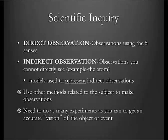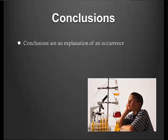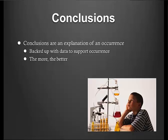It's very important that we're careful in these observations because they're going to help us arrive at the answer we need to find. When we use those observations and come up with an answer, we come up with conclusions. Conclusions are basically an explanation of an occurrence. We have to make the distinction between an observation and a conclusion — an observation gives us a description, while conclusions explain that particular occurrence. We use the observations and data to support that occurrence, and the more of them we have, the better and more concrete our conclusion is going to be.